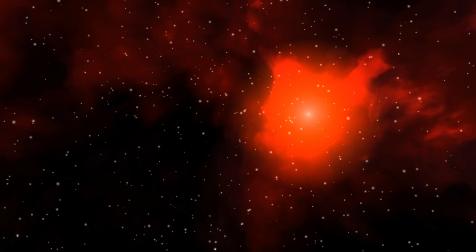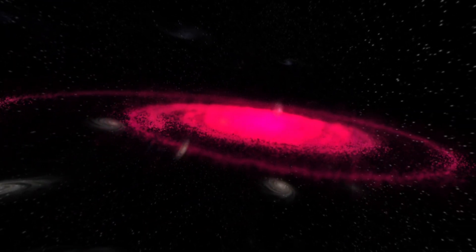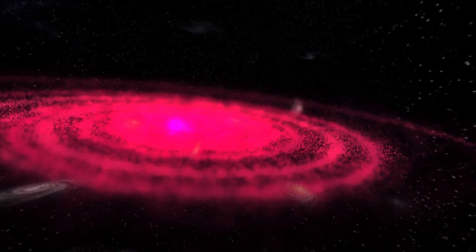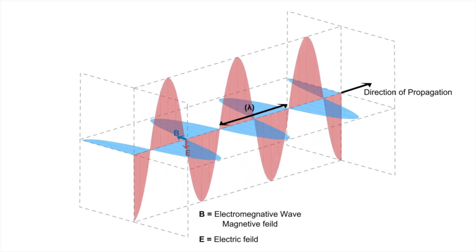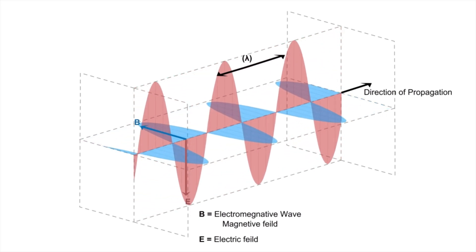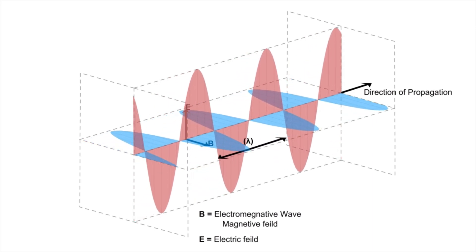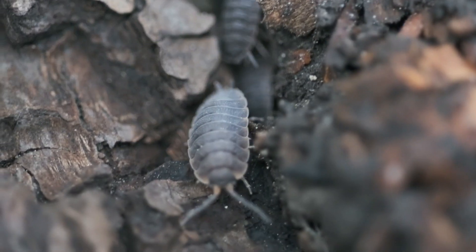While much of the focus has been on internal processes, Betelgeuse's environment in the Orion constellation may also hold some clues. The star resides in a complex region of space filled with interstellar gas and dust, which can influence how its light reaches Earth. Changes in the surrounding material, such as shock waves or ionization fronts caused by Betelgeuse's own outbursts, could interact with the star's radiation in unexpected ways.